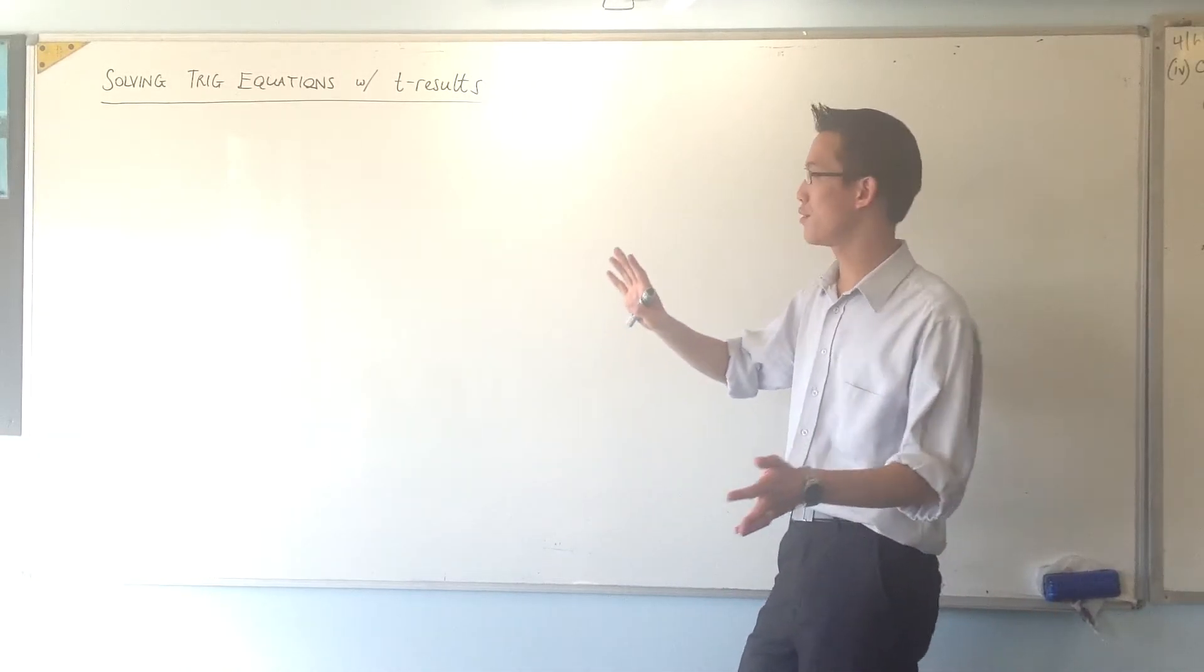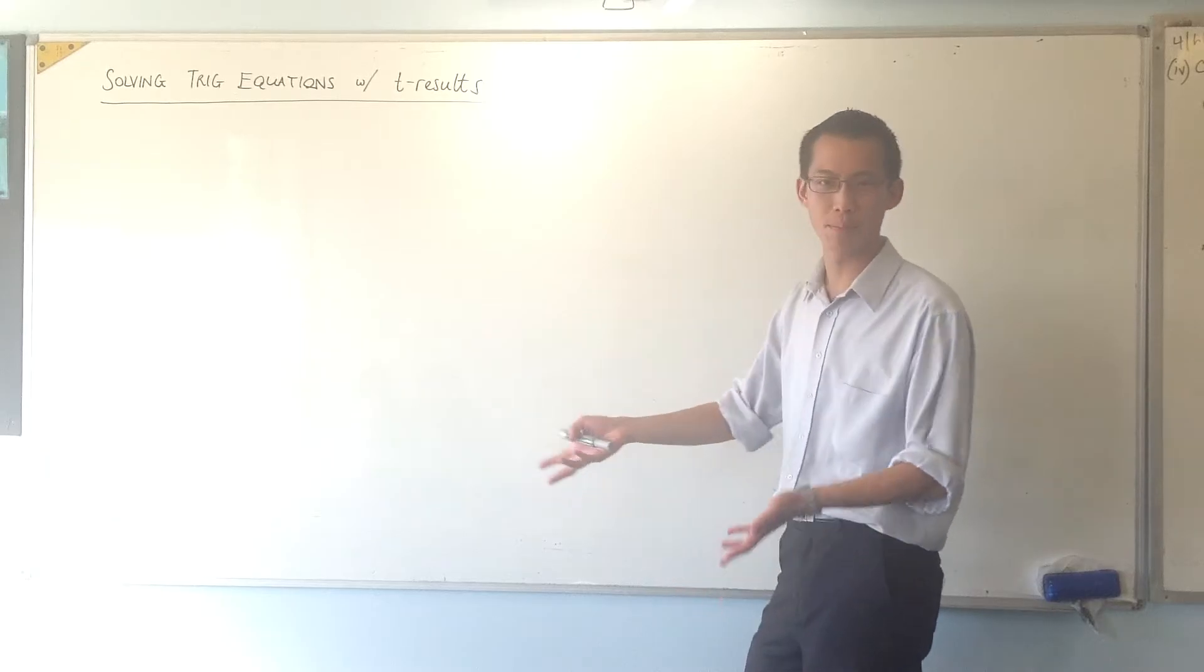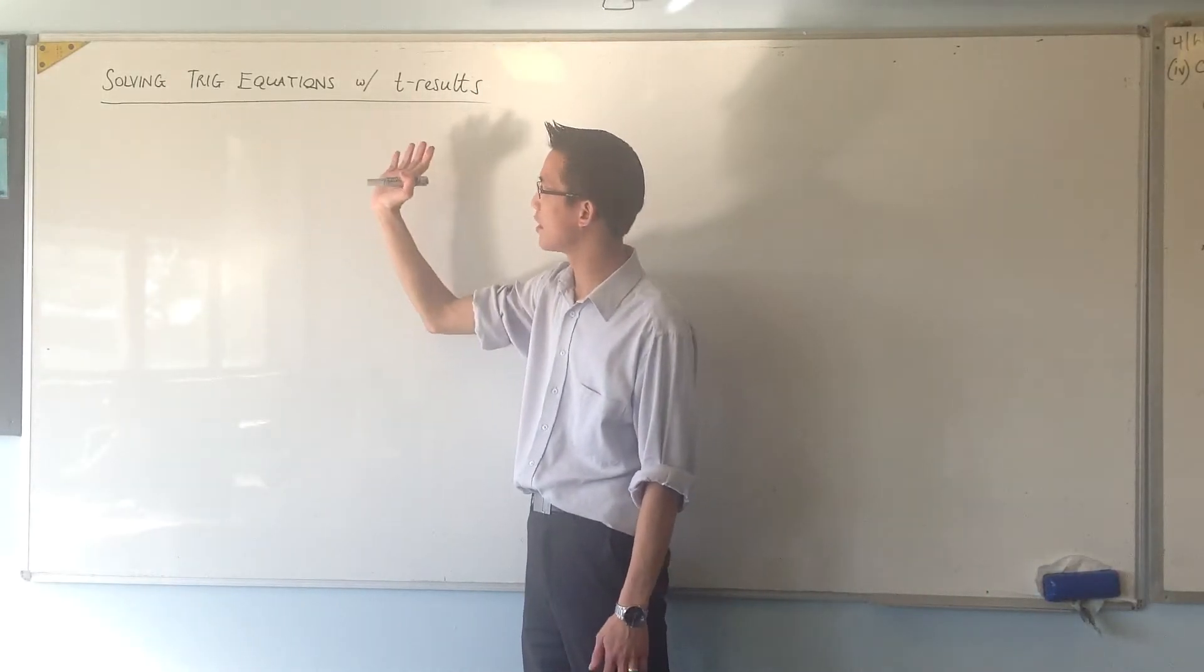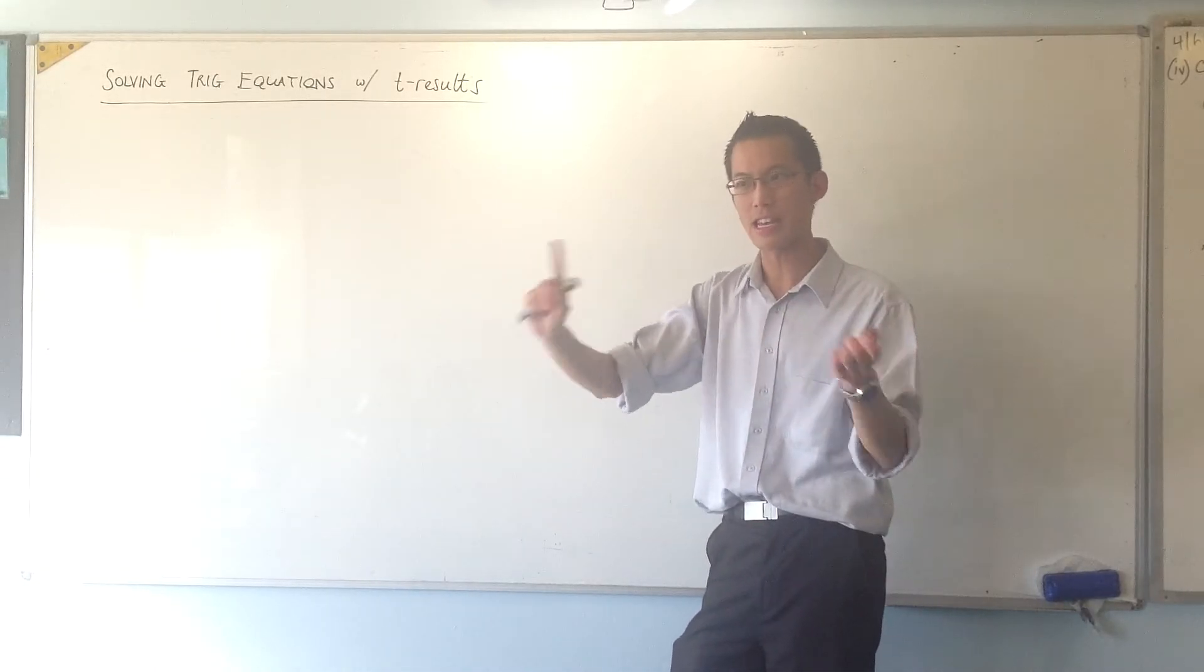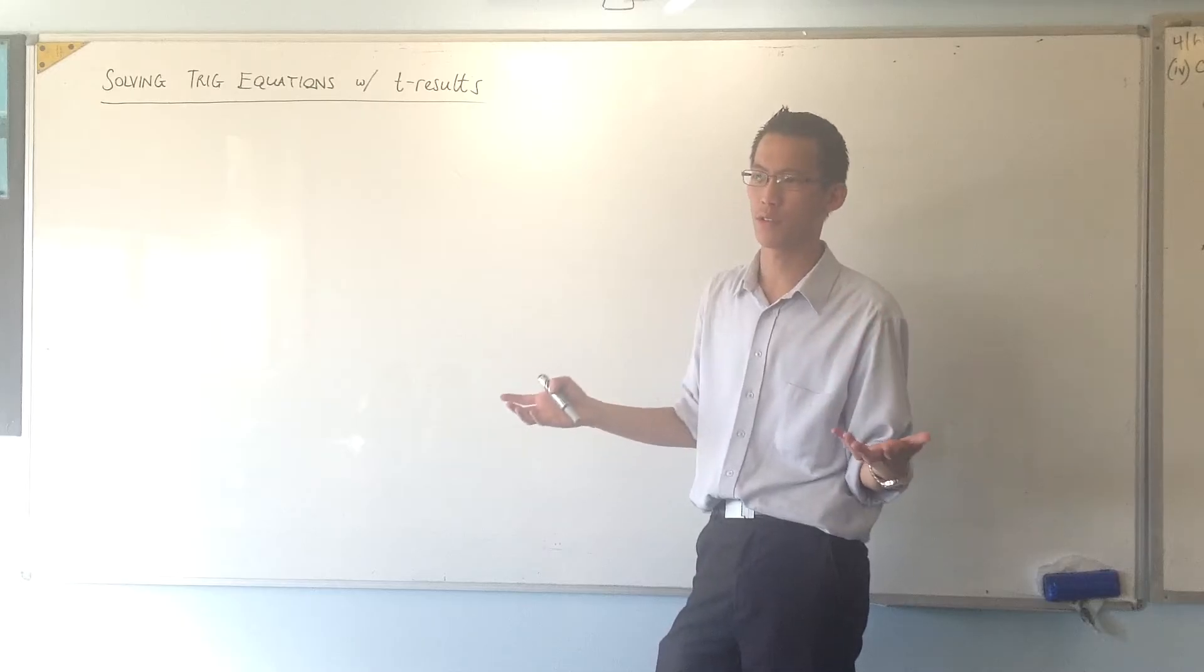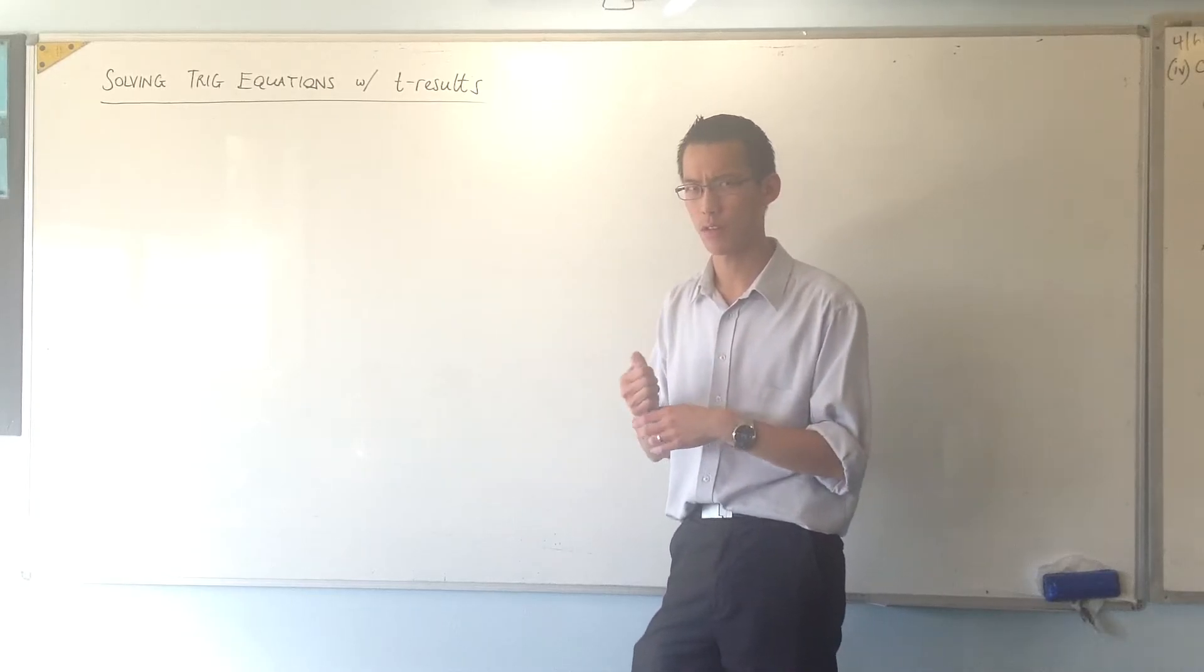So we're going to do questions both ways, like with T results and then solving it the way that you normally would. I'm going to choose simple examples, ones that you can equally do both ways so that you don't get bogged down in how difficult the question is. You can see the concept at work.